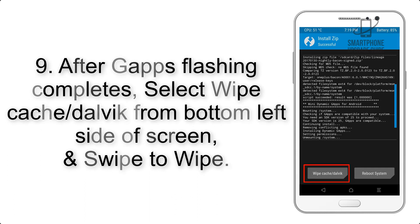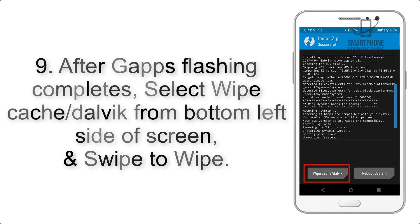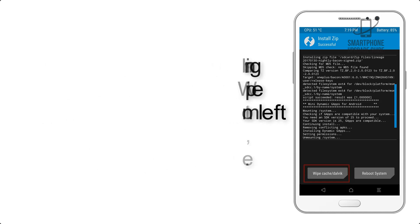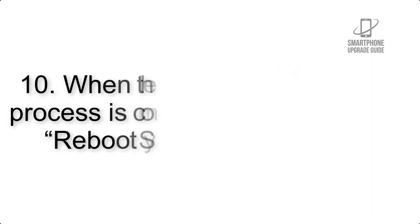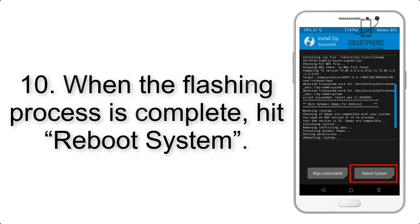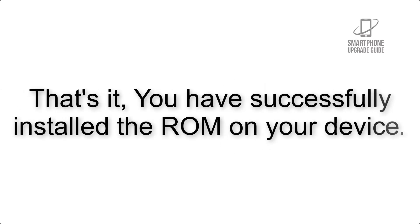Step 8: Flash the GApps zip package in the same manner. Step 9: After GApps flashing completes, select Wipe Cache and Dalvik from the bottom left side of the screen and swipe to wipe. Step 10: When the flashing process is complete, hit Reboot System. You have successfully installed the ROM on your device.